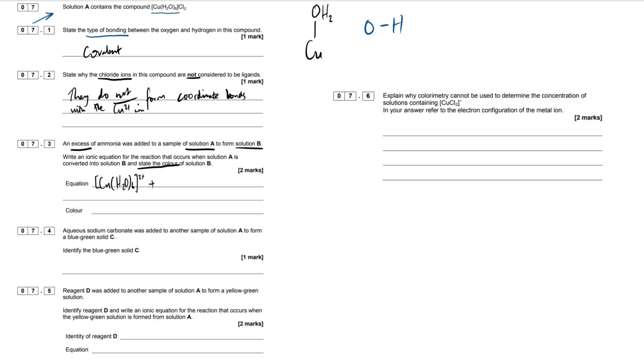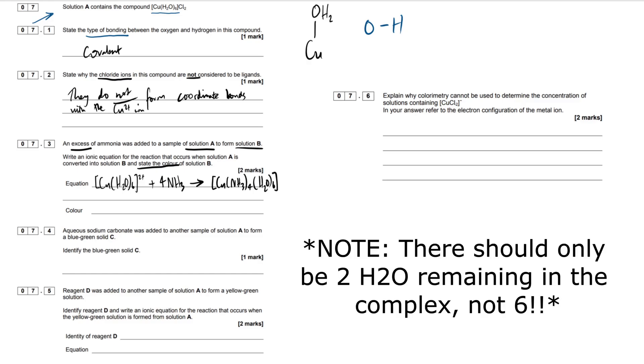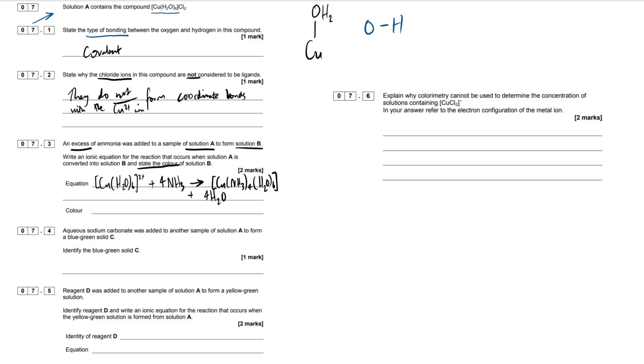Next question then, an excess of ammonia was added to a sample of solution A to form solution B. Write an ionic equation for the reaction that occurs when solution A is converted into solution B and states the color. All right, so transition metals, massive pain. You just have to remember all the equations involved, all the minor caveats, as well as the color changes. So this is one unique to copper. Try and remember this. When we have an aqueous copper complex and we're adding an excess of ammonia, what's taking place is actually incomplete or partial ligand substitution. This is just a unique case you have to remember. So let's draw out the equation then. We're going to be having our copper H2O6 aqueous complex 2+. Keep the charge in there. It's very important.